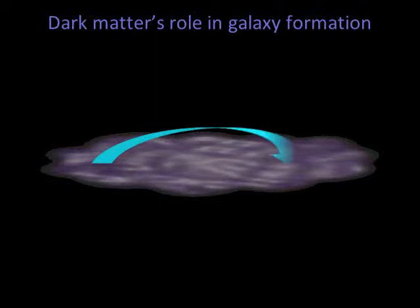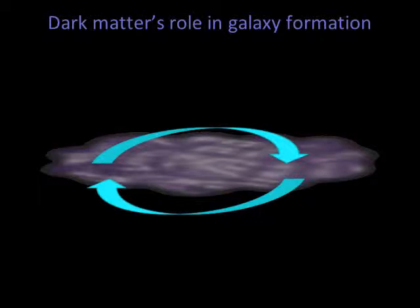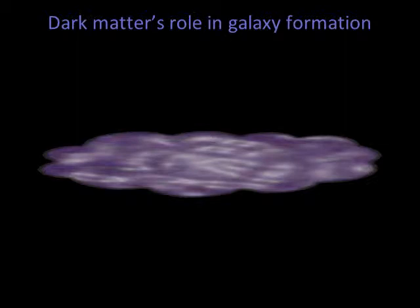The dark matter is weakly interacting, so it's unable to radiate away orbital energy. It therefore stays in place and will not collapse into a disk like the rest of the material.